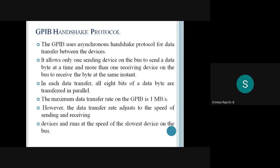This is the GPIB handshake protocol. GPIB uses an asynchronous handshake protocol for data transfer between devices. It allows only one sending device on the bus to send a data byte at a time, while more than one receiving device can receive the byte at the same instant. In each data transfer, all eight bits of a data byte are transferred in parallel. The maximum data transfer rate on GPIB is 1 MB per second.